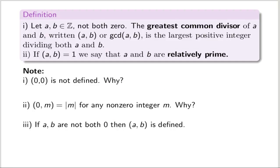Greatest common factors, or GCDs. For a GCD, we'll always use the round parentheses notation (a, b), or write GCD of a and b if we want to emphasize it's not an ordered pair. We start with two integers that are not both zero. The GCD of a and b is the largest positive integer dividing both a and b — so it's really a self-defining concept: the greatest common divisor. And if the GCD is 1, we'll say that a and b are relatively prime, meaning they share no common prime factor.